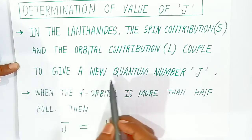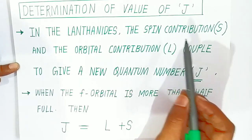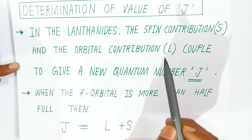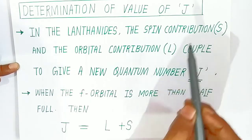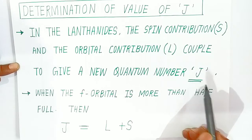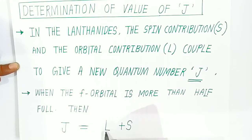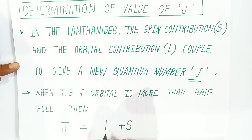S and L couple together to give a new quantum number called j. To find the value of j, you need to know the spin magnetic moment and the orbital magnetic moment. When the f orbital is more than half filled, you calculate j by adding the orbital magnetic moment and the spin magnetic moment: j = L + S.